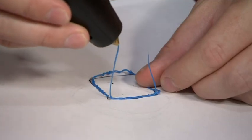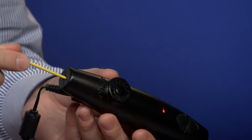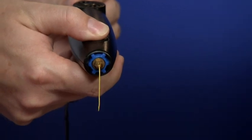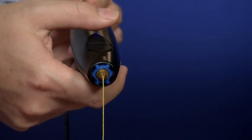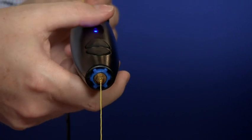The 3Doodler is a fat pen where you stuff in a rod of plastic on the back end. Inside is a little motor that feeds this rod into a heated nozzle, which melts the plastic and emits it at the tip. Pretty much like a hot glue gun, but with plastic instead of glue.